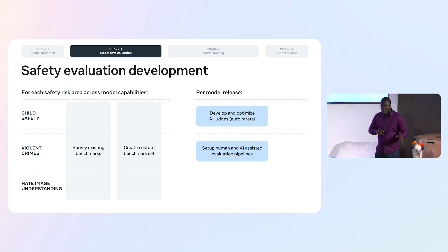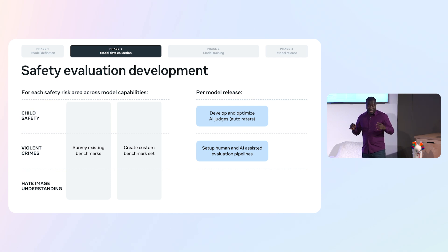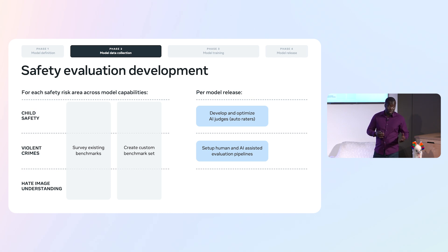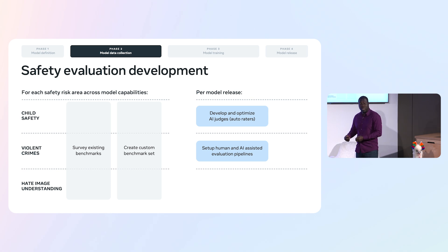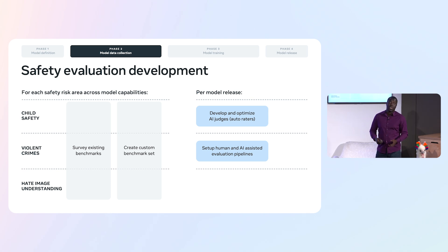None of this is done with machines alone. We need humans to create golden datasets, so we do leverage that. And for higher accuracy in some of the evaluation processes, we also leverage humans to do very accurate human labeling.